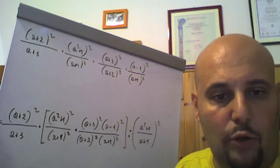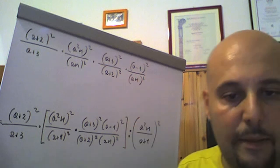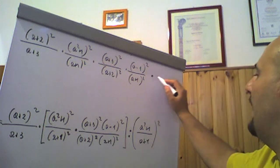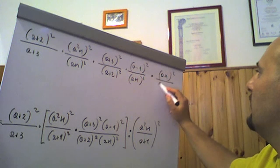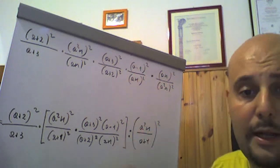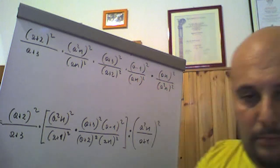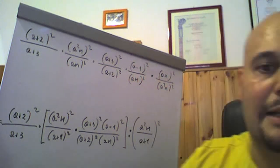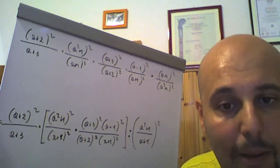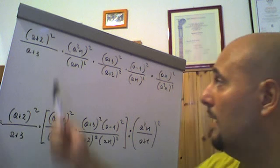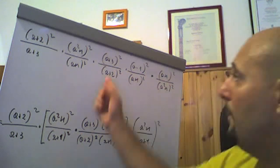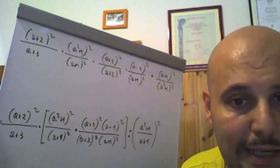Naturalmente non ho fatto le condizioni di esistenza: vanno posti i denominatori tutti diversi da zero. Adesso andiamo a fare: che moltiplica, naturalmente ribaltiamo (a più 1) al quadrato diviso (a quadro più 1) al quadrato. Ricordo che a quadro più 1 non si può scomporre. A più 3 è diverso da zero quando a è diverso da meno 3. (A più 1) al quadrato è diverso da zero quando a più 1 è diverso da zero, quindi a è diverso da meno 1. (A più 2) al quadrato è diverso da zero quando a è diverso da meno 2.